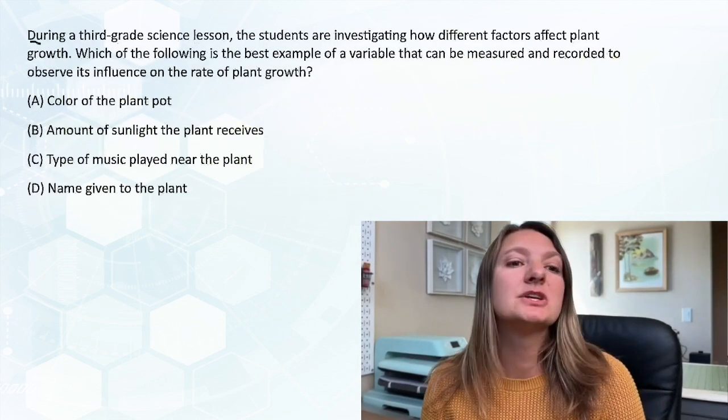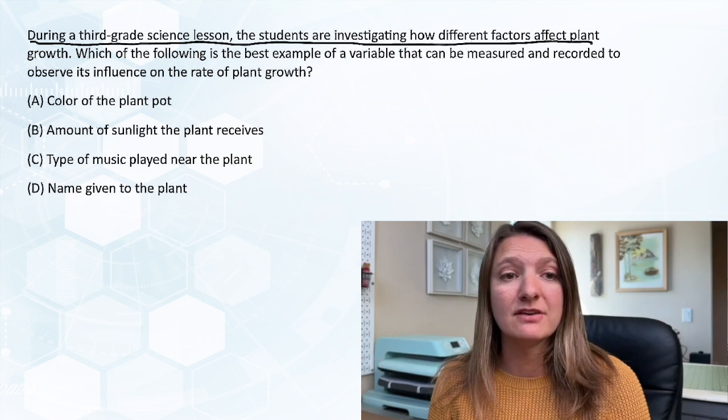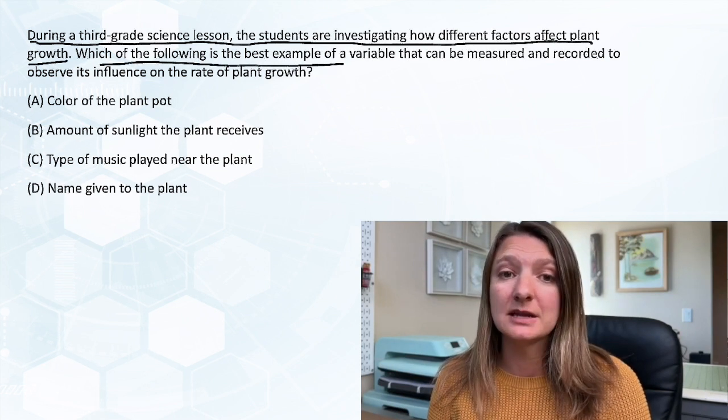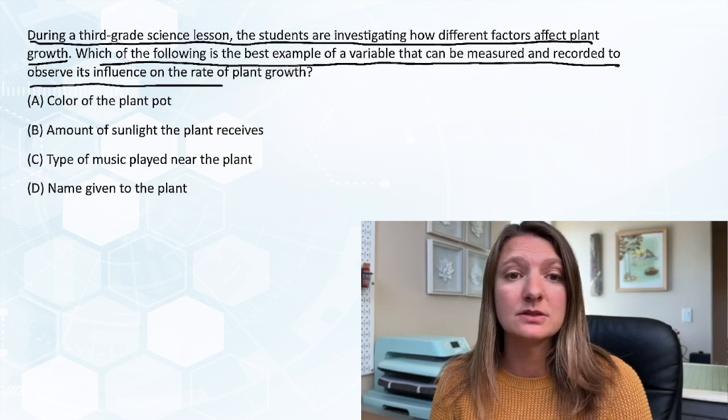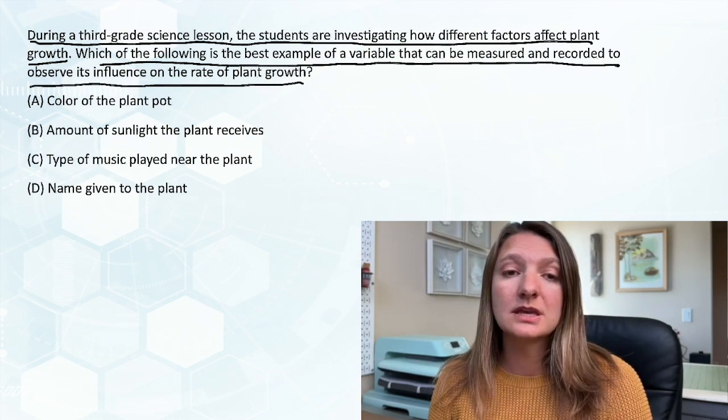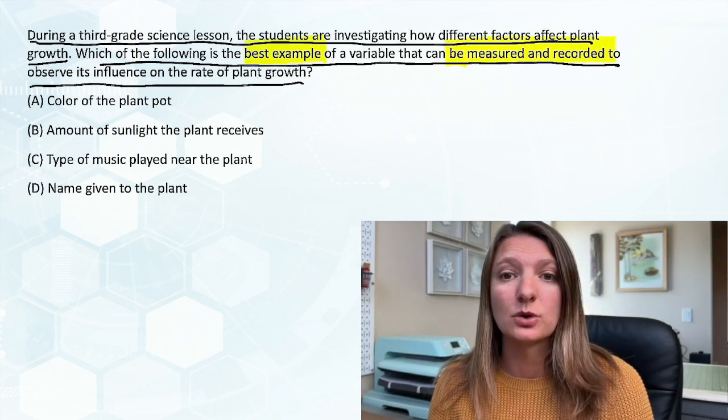Okay, question three. During a third grade science lesson, the students are investigating how different factors affect plant growth. Which of the following is the best example of a variable that can be measured and recorded to observe its influence on the rate of plant growth? So the key words here are the best example and that it can be measured and recorded.